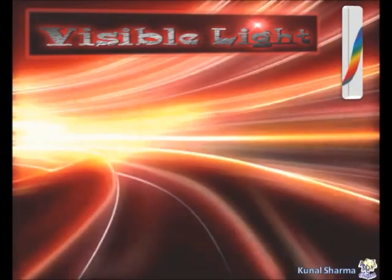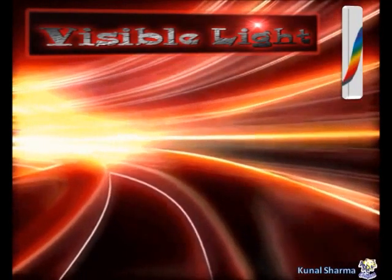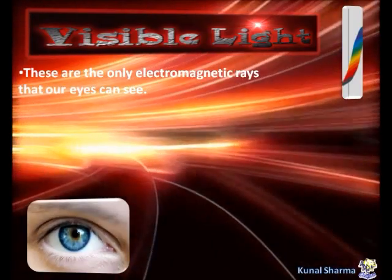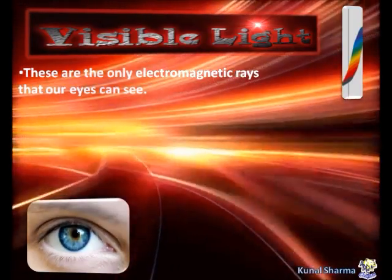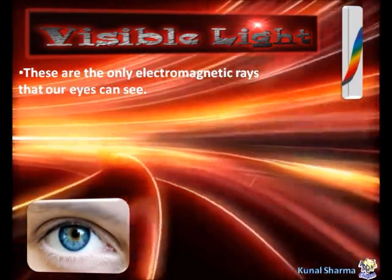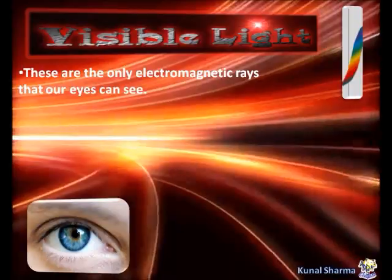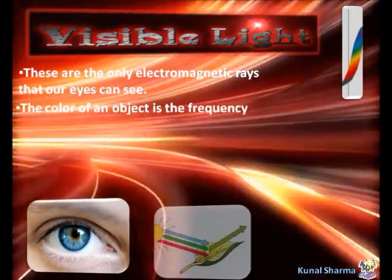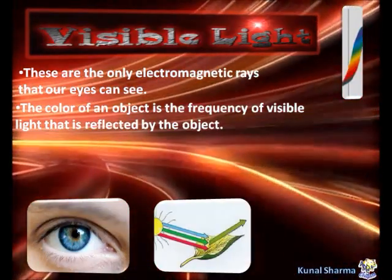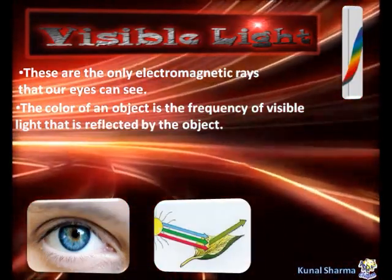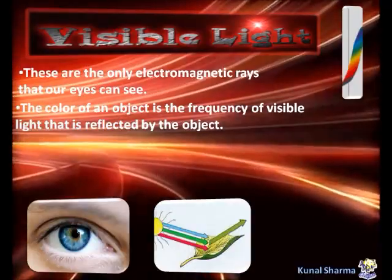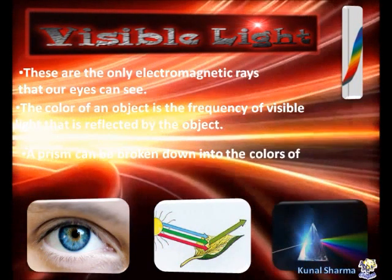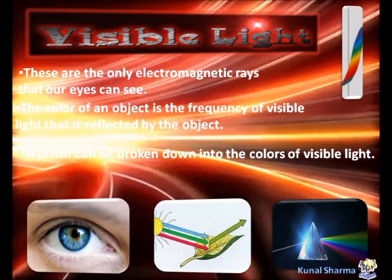Visible light. Visible light are the only electromagnetic rays that our eyes can see. The color of an object is the frequency of visible light that is reflected by the object. A prism can break light down into the colors of visible light.